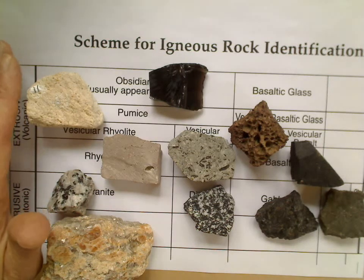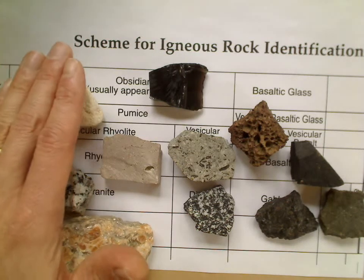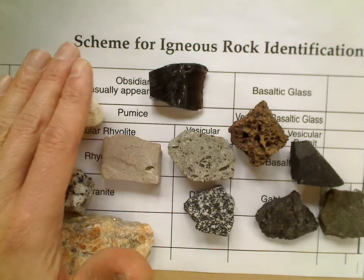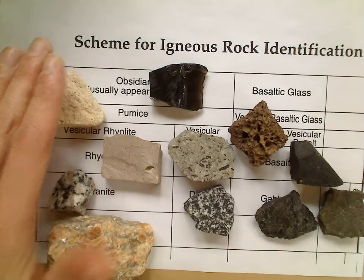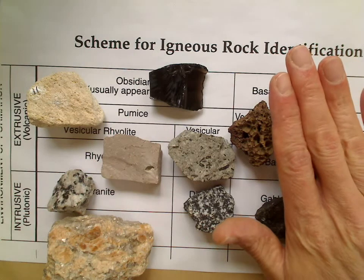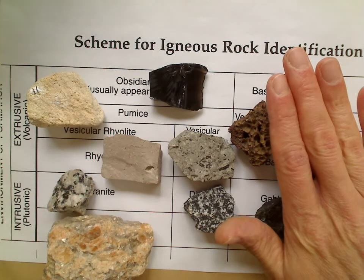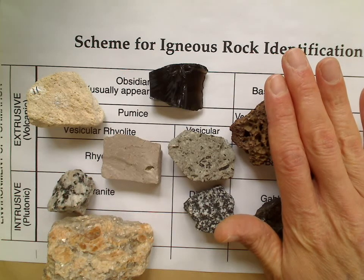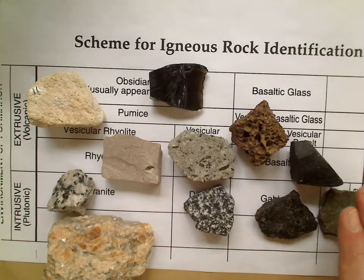The left side is called felsic, because those minerals have high silicon and aluminum in them. The rocks on the right side are mafic, because the minerals have more magnesium and iron in those rocks.